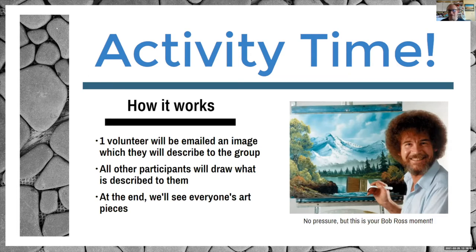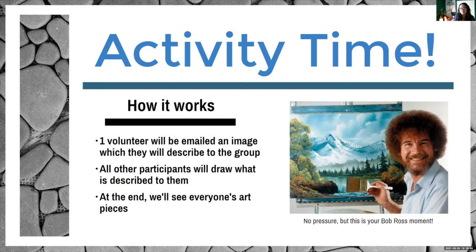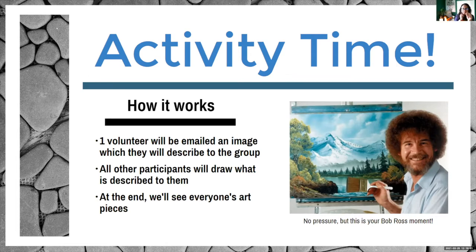Opening for questions about the description. One participant asks about the circles at three o'clock — they're three regular circles that crescendo down and overlap a little, kind of like linking arms, all inside the oval. Another asks about the right triangle at seven o'clock — the 90-degree angle side faces the outline of the oval, opening up into the circle.